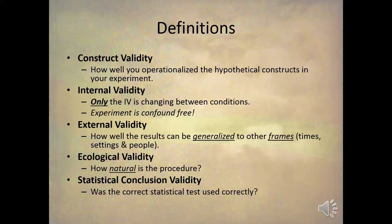What makes an experiment valid? The major types of validity are construct validity, internal validity, external validity, ecological validity, and statistical conclusion validity.